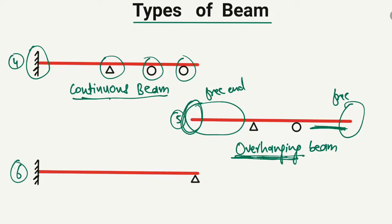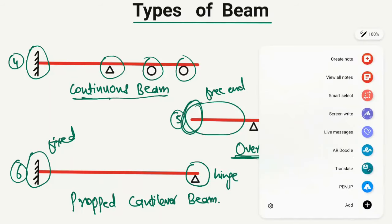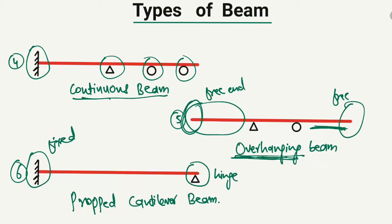The last type of beam is known as the propped cantilever beam. One end is supported by a fixed support like a cantilever, while the other end is supported by a hinge support. So there are two supports: one fixed support at one end and one hinge support at the other end — that is why it is known as the propped cantilever beam.